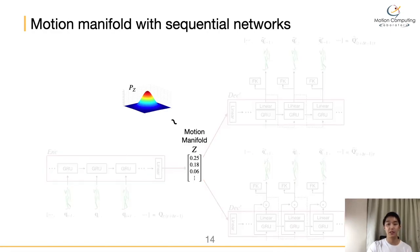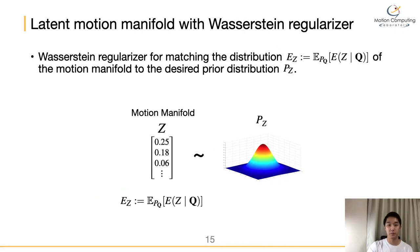Lastly, let me explain the manifold regularizer, which encourages the encoded motion distribution to approximate some prior distribution. We adopt the Wasserstein regularizer for matching the distribution of the motion manifold to the desired prior distribution. In our case, we use the multivariate normal distribution. Unlike a variational encoder, the sequential network trained with the Wasserstein regularizer allows non-random encoders to deterministically map inputs to latent codes, and thus helps random sampling or interpolation of points in the motion manifold to correspond to plausible motions.